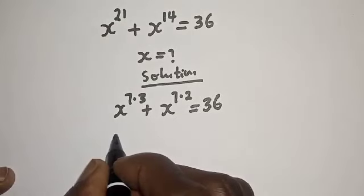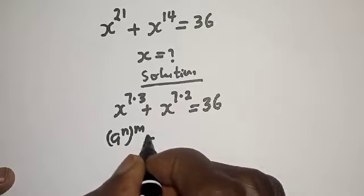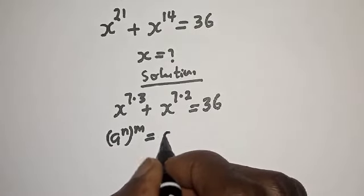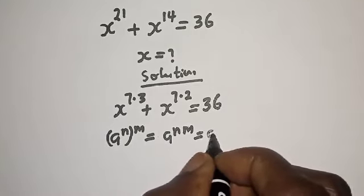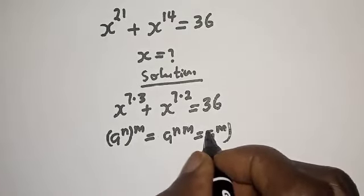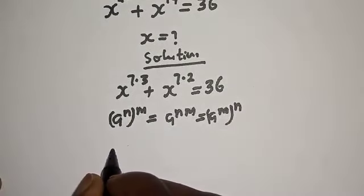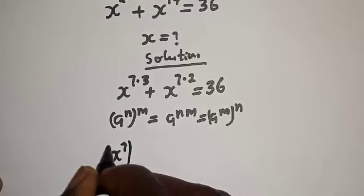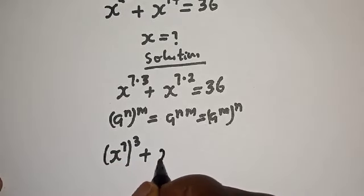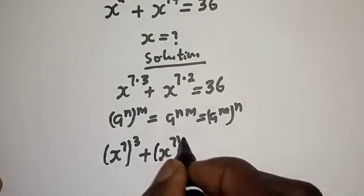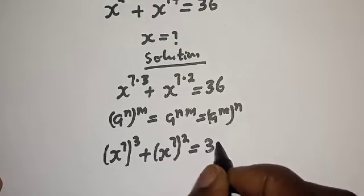Take note of this exponential rule: if you have a raised to power n, to the power of m, this is equal to a raised to power n times m. Applying this, s raised to power 21 becomes s raised to power 7 to the power of 3, and s raised to power 14 becomes s raised to power 7 squared, giving us a sum equal to 36.